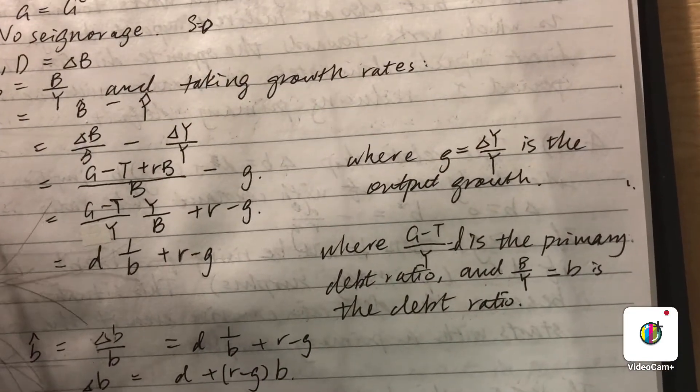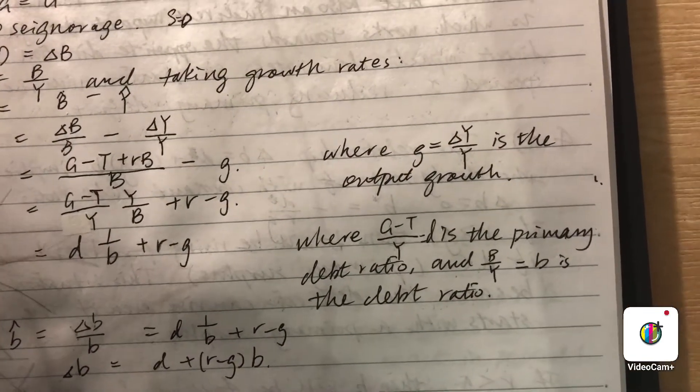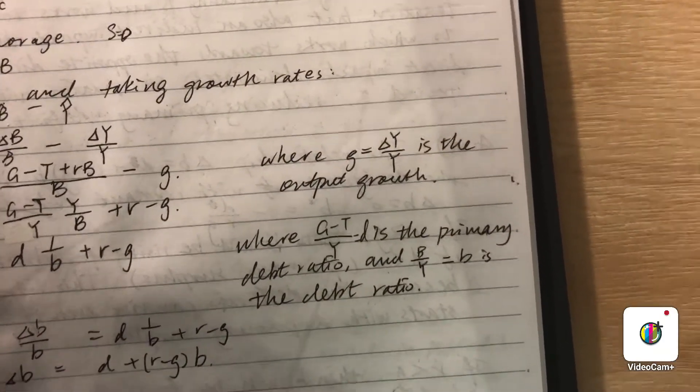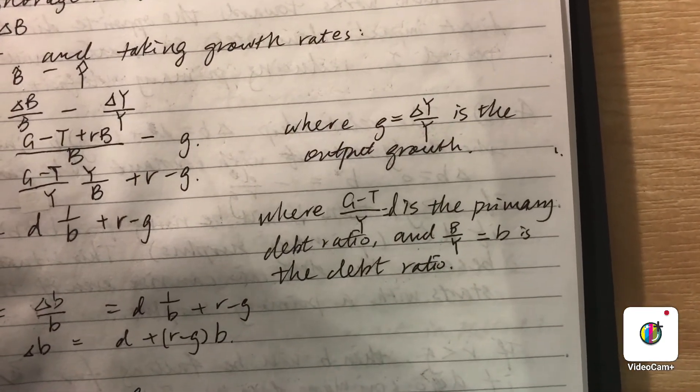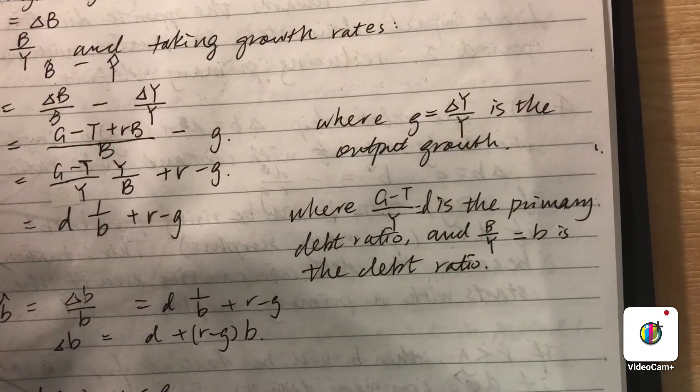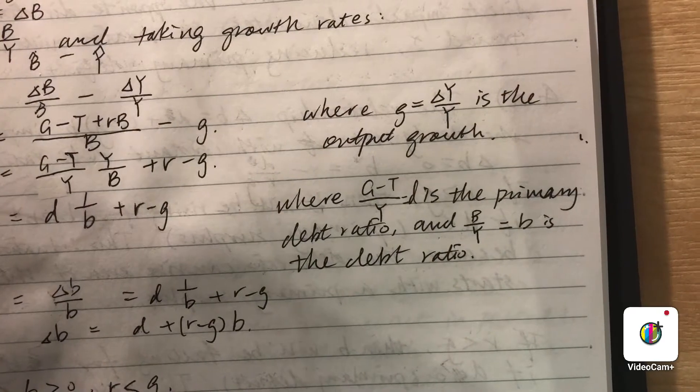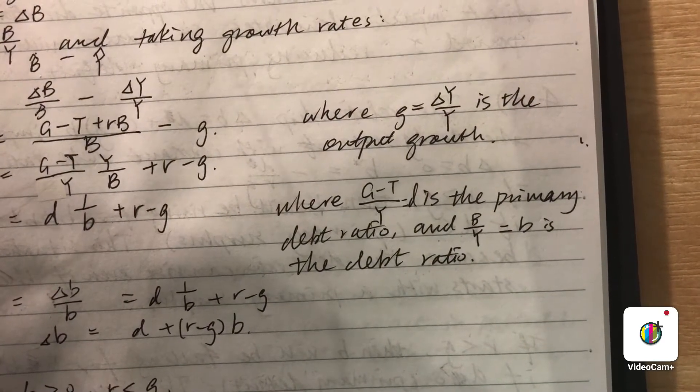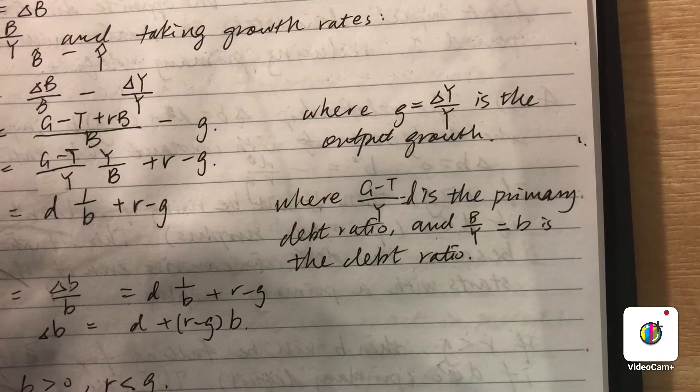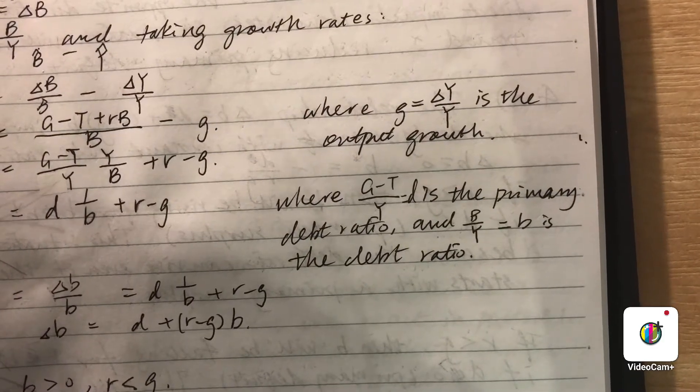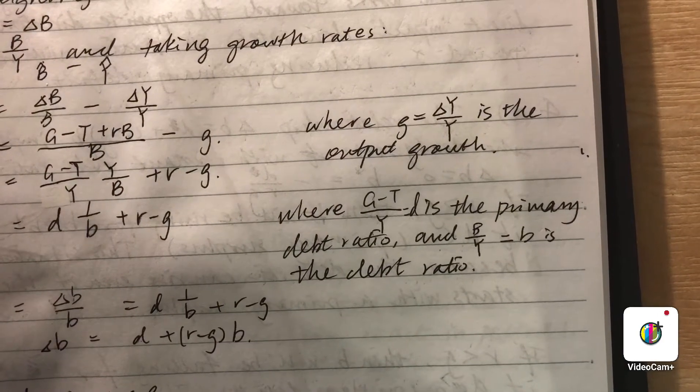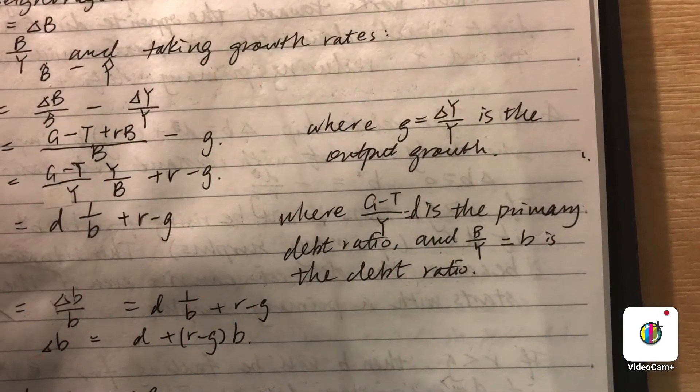It is made of, on the left hand side, government purchase plus its interest payment, and on the right hand side it is tax plus new bonds, which is budget deficit. Because if you rearrange this, you move T to the left hand side, then you see Delta B is G plus RB minus T, which is what it has to pay out minus what its revenue is.